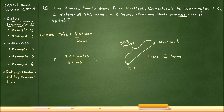Using a calculator, 342 divided by 6 gives 57. The units are miles per hour, or miles over hours. So their average rate of speed is 57 miles per hour.